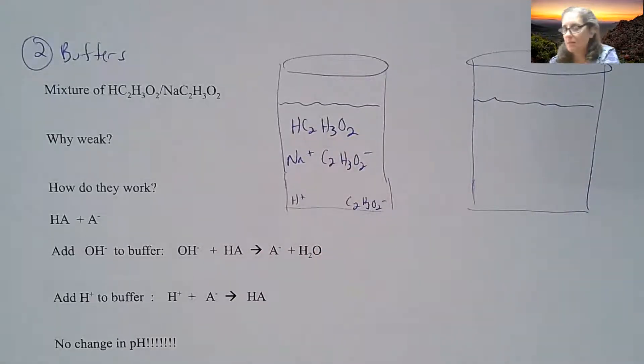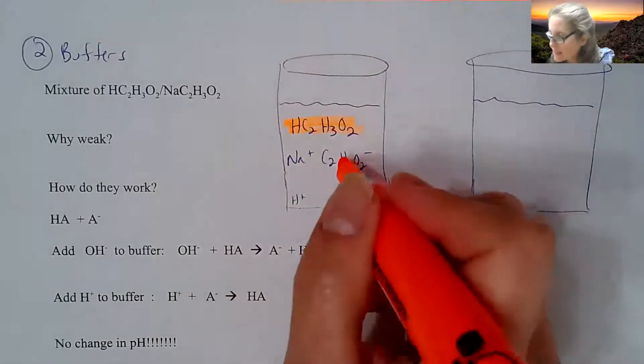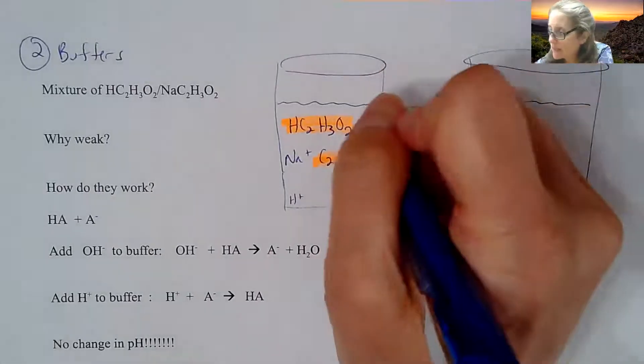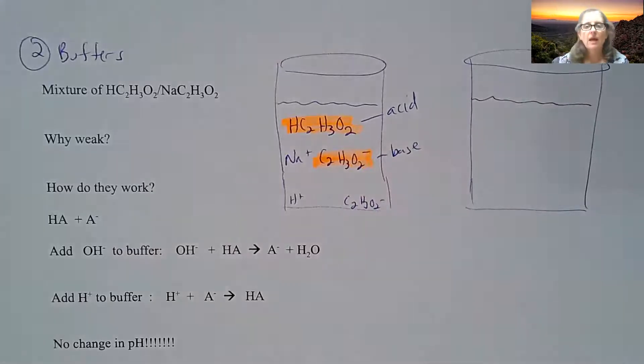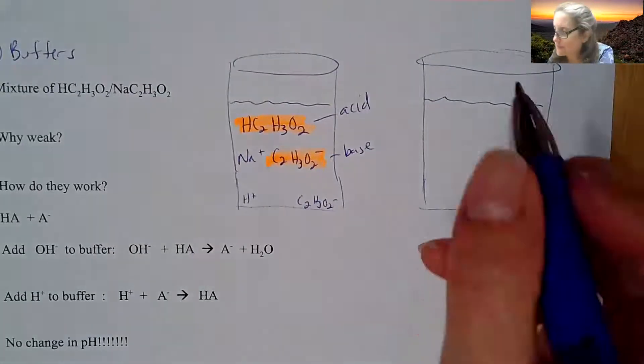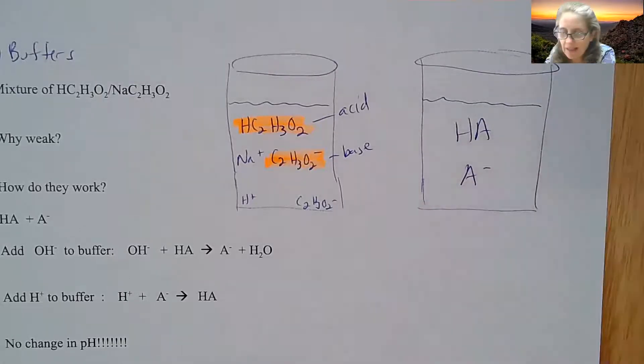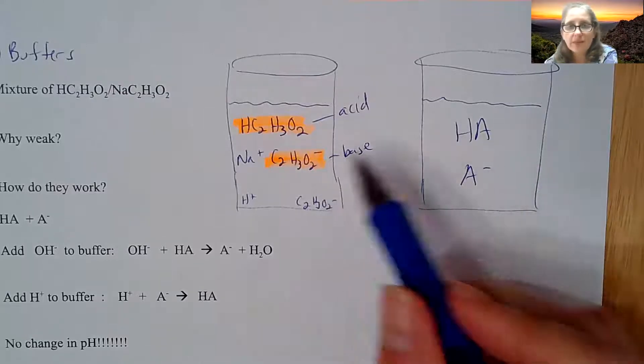What's interesting about this combination is this part here from the acetic acid and the acetate coming from the salt give you both an acid and a base component. Generically, you could write out a buffer as being HA for the acid and A- for the anion, the base part.